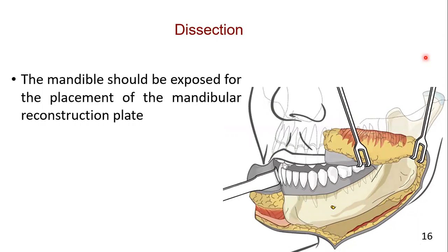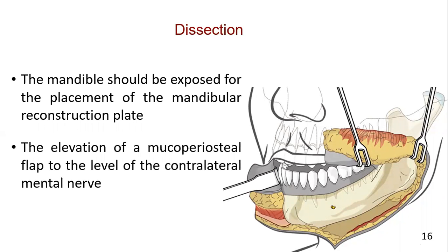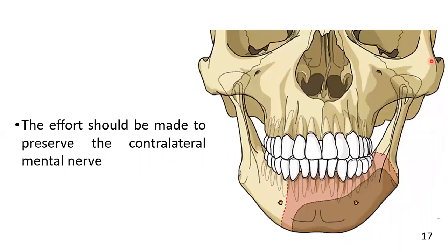The mandible should be exposed far enough to allow for the placement of a mandibular reconstruction plate beyond the resected edge on the distal segment. This may require elevation of a mucoperiosteal flap to the level of the contralateral mental nerve. Every effort should be made to preserve the contralateral mental nerve.